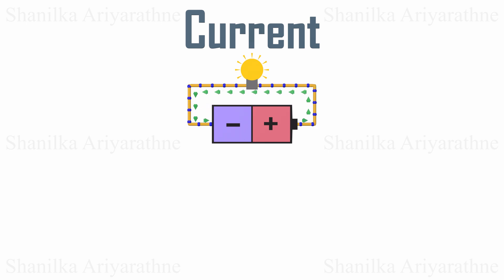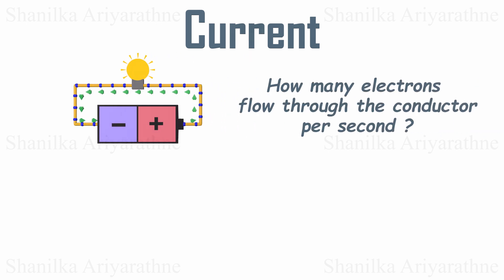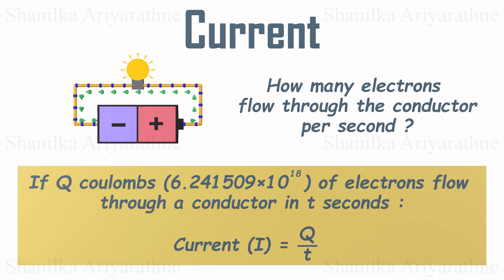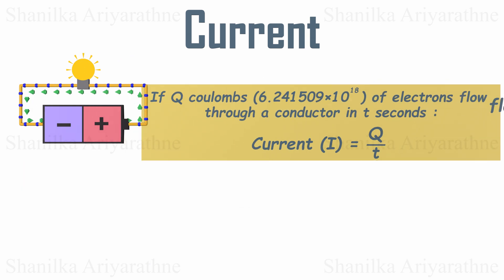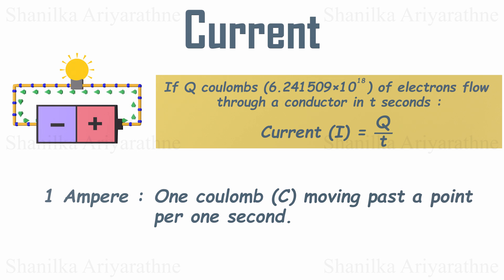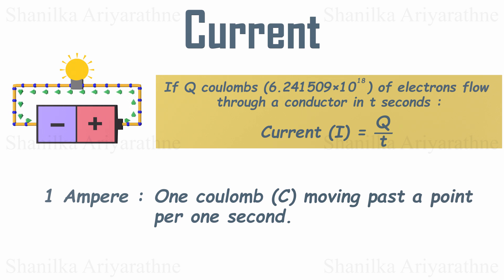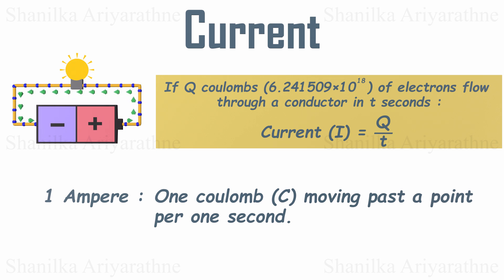Now let's move on to current. We define the amount of current by counting how many electrons flow through the conductor per second. If Q coulombs of charge pass through in T seconds, then the current is simply the amount of charge divided by the time it takes. The unit of current is called amperes, or simply amps. One ampere equals one coulomb moving past a point per second. To create a one ampere current flow, 6.2 quintillion electrons have to flow through a single point every second.